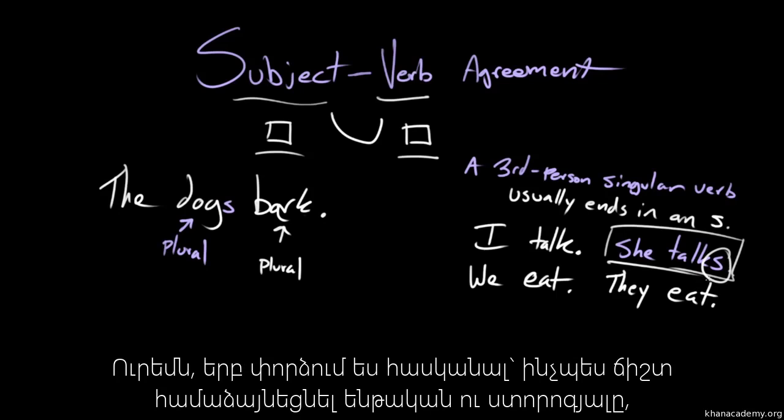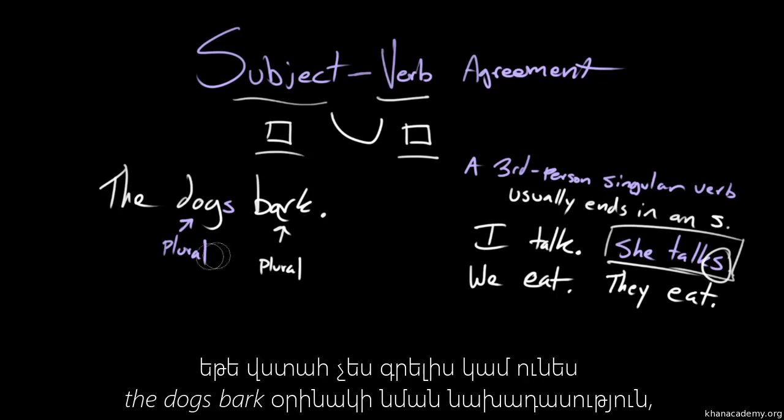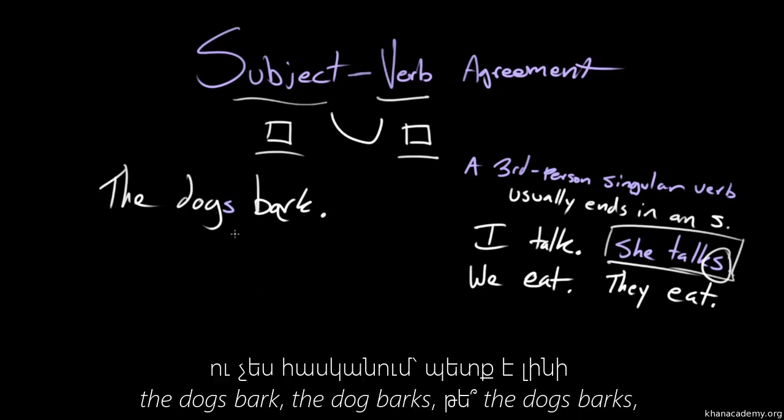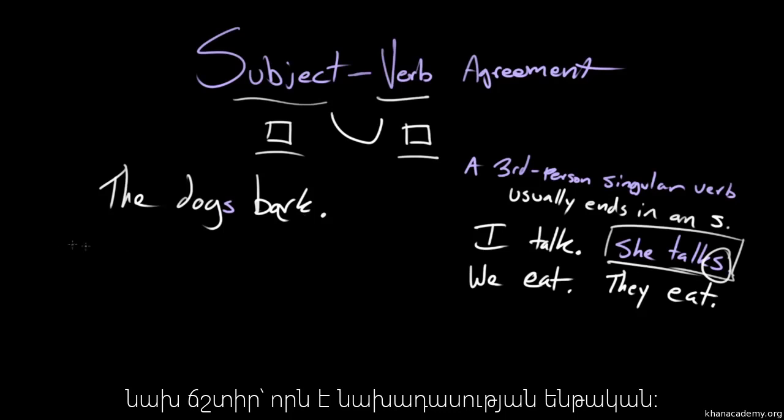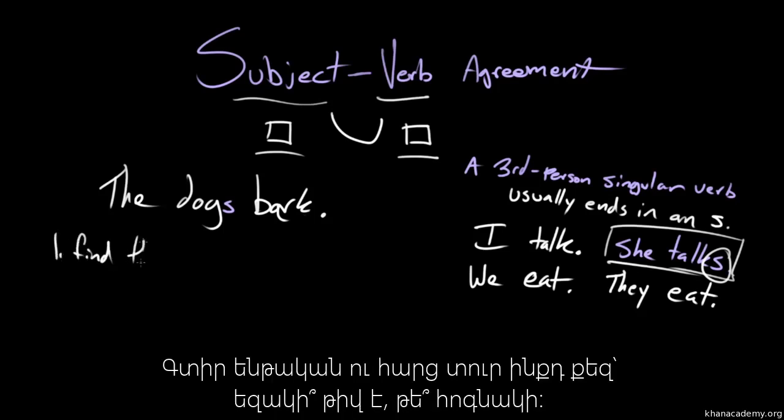So if you're unsure as you're writing, if you're looking at a sentence like the dogs bark, and you can't figure out if it's supposed to be the dogs bark or the dog barks or the dogs barks, ask yourself first, what is the subject of the sentence? So first find the subject.